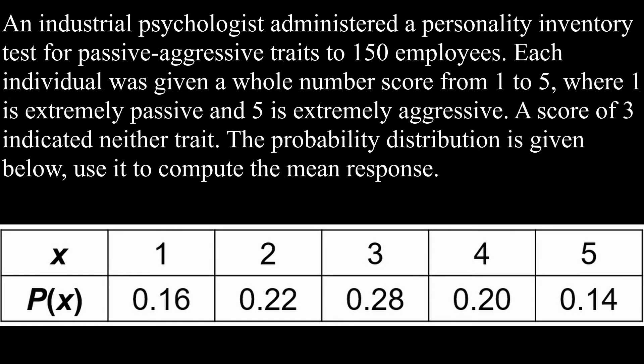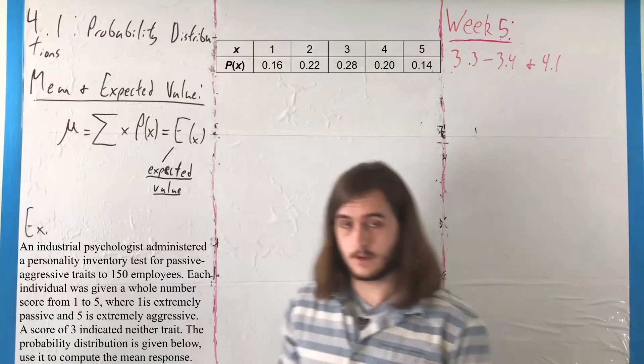For this example, an industrial psychologist administered a personality inventory test for passive-aggressive traits to 150 employees. Each was given a score from 1 to 5, where 1 represents extreme passivity and 5 represents extreme aggression. A score of 3 indicates the middle, neither. The probability distribution is given below, and we want to use it to compute the mean response.